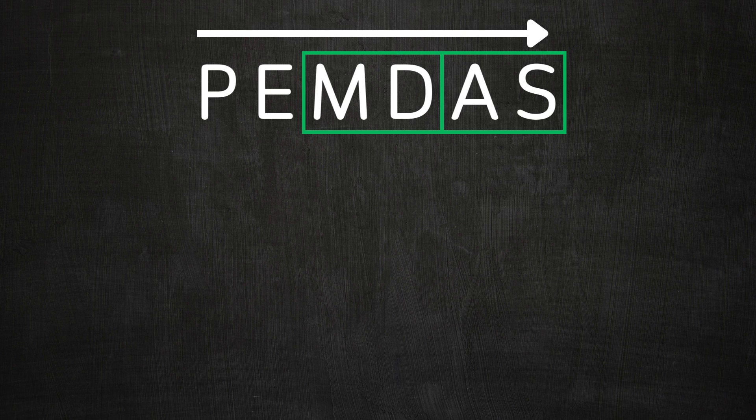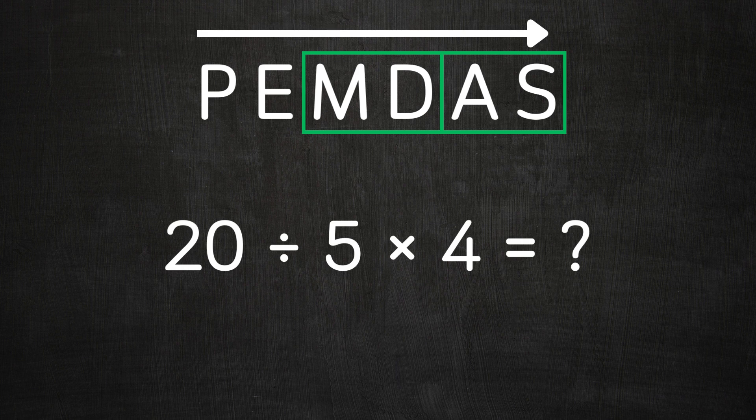All right, now you know how exactly this works and you will never get this wrong again. Let's practice this with our problem. Now when you see this problem, you know it's PEMDAS. We have no parenthesis and also no exponents.